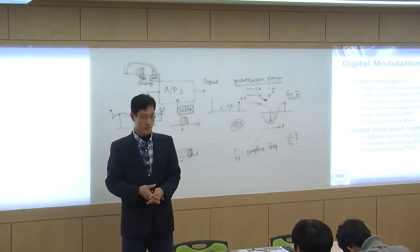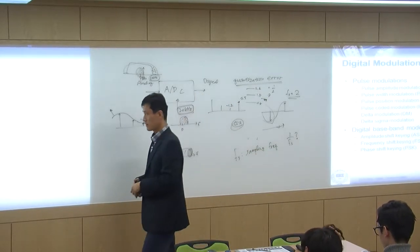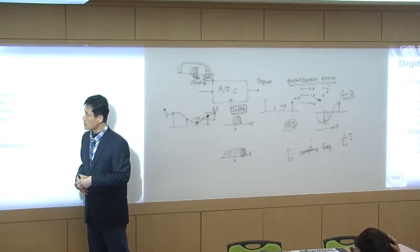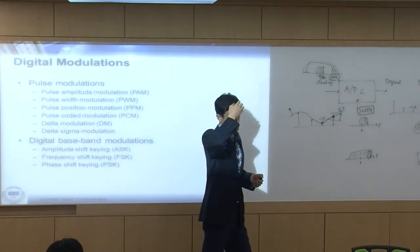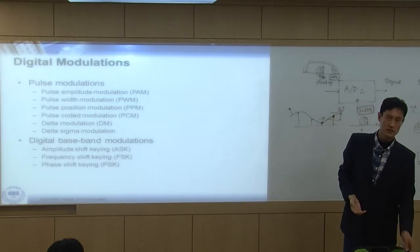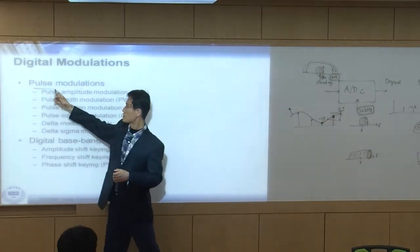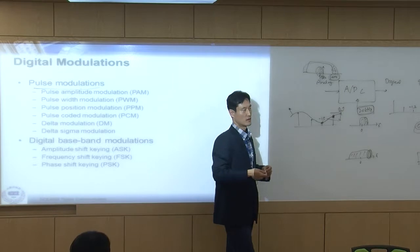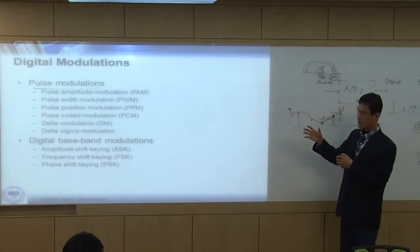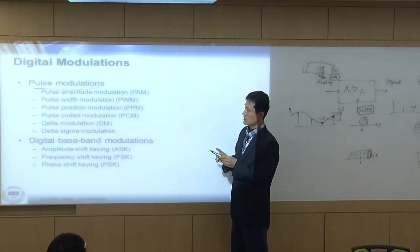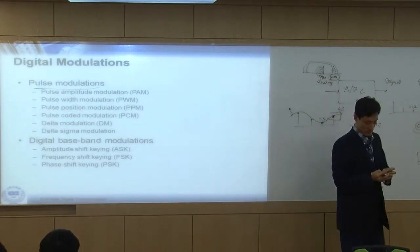That covers the basics of converting analog signals to digital. Now we'll discuss digital modulation. Generally in digital modulation we can think about two different types, and the one we're looking at now is pulse modulation — where we use pulses as a carrier.